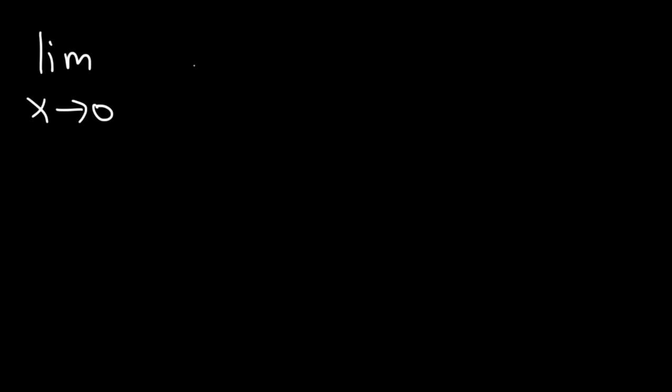Now what about this one? What is the limit as x approaches 0 of the absolute value of x divided by x? In this case, we can't use direct substitution. 0 over 0 — what is that going to be? It could be 8, it could be 1, it could be 0, it could be undefined. So you can't just plug it in.